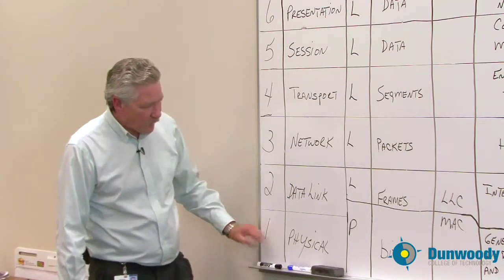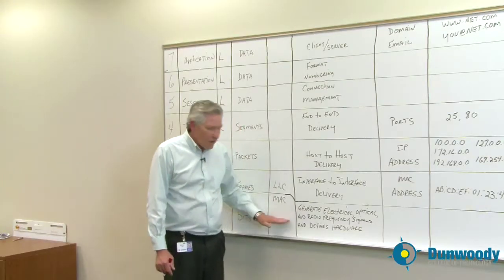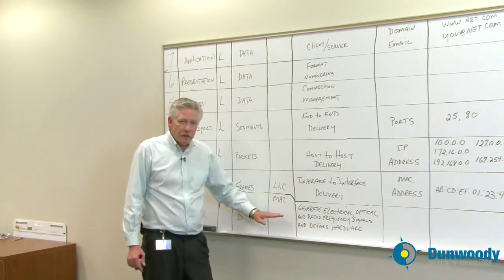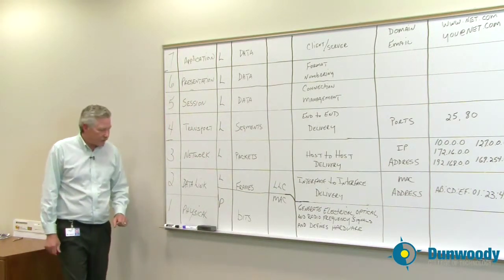So the physical layer is the piece that streams the bits across either the electrical, optical, or radio frequency signals.